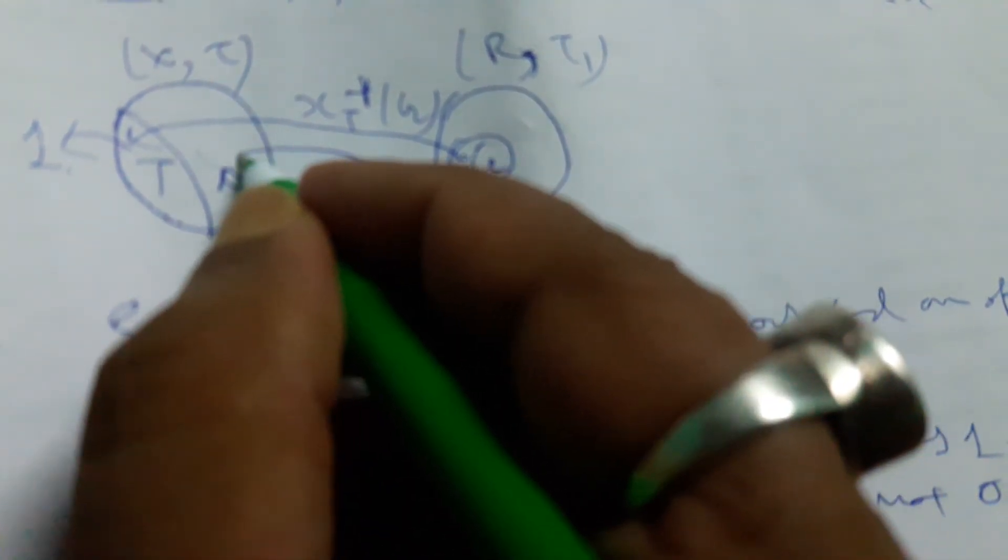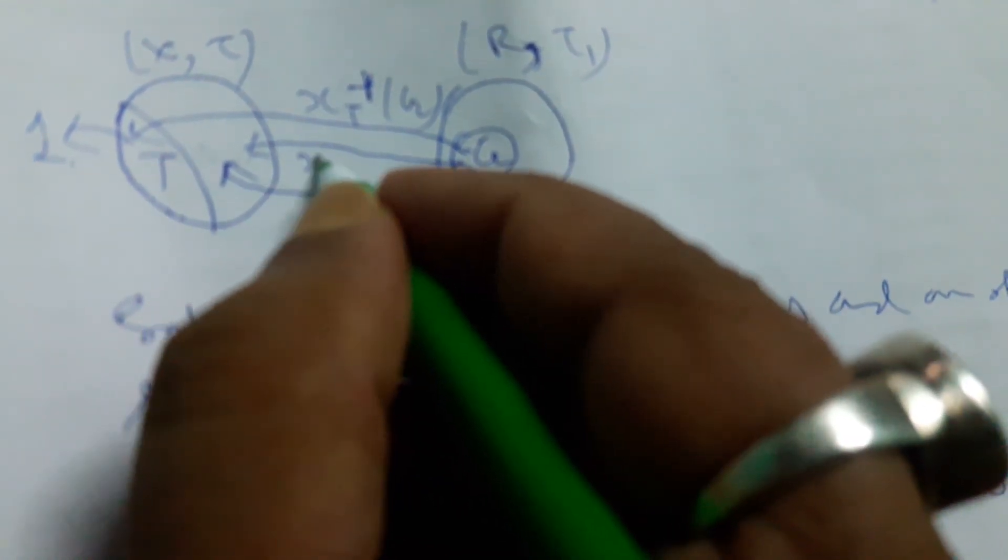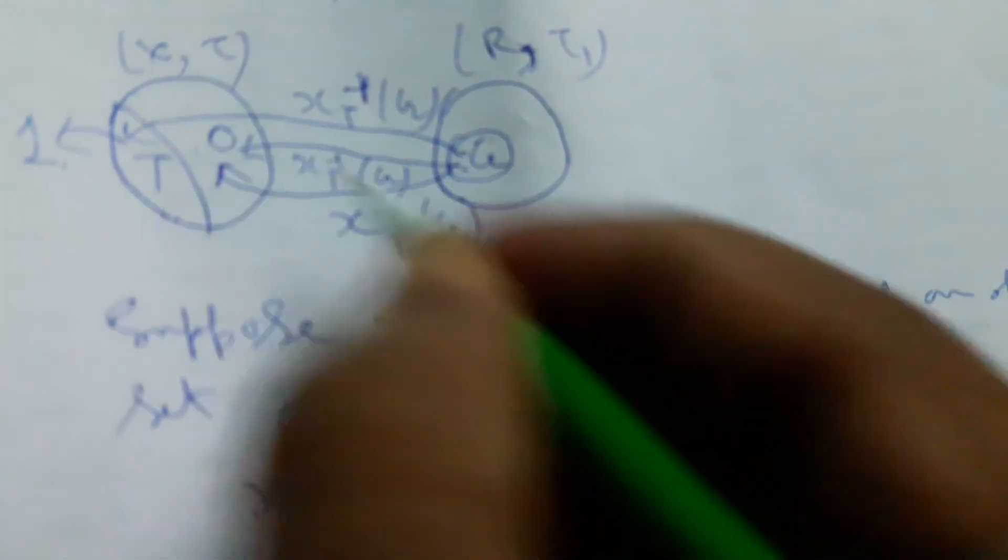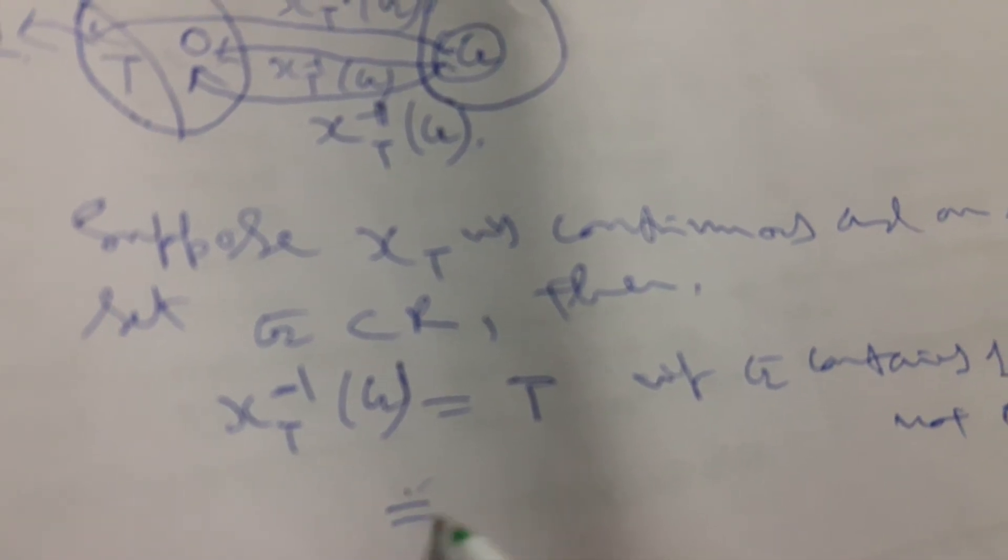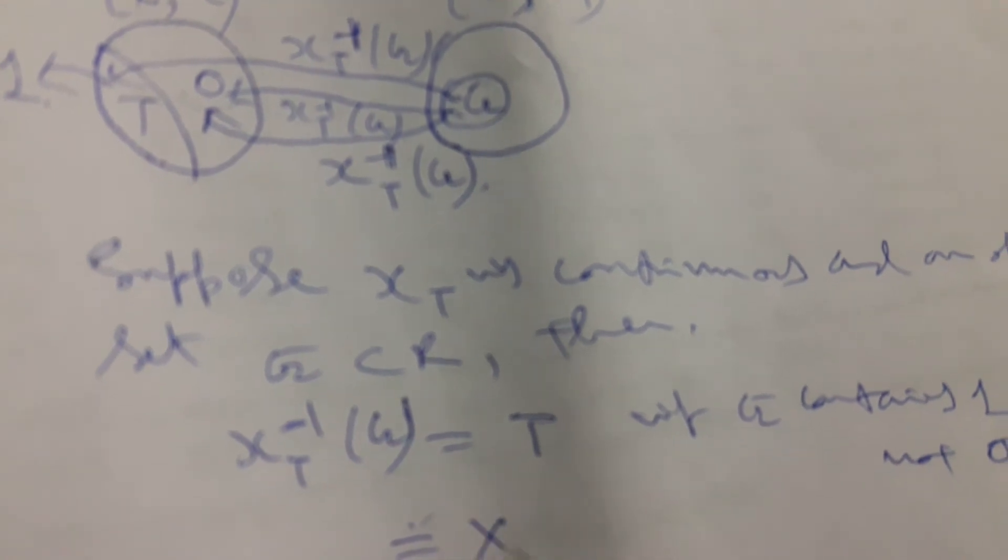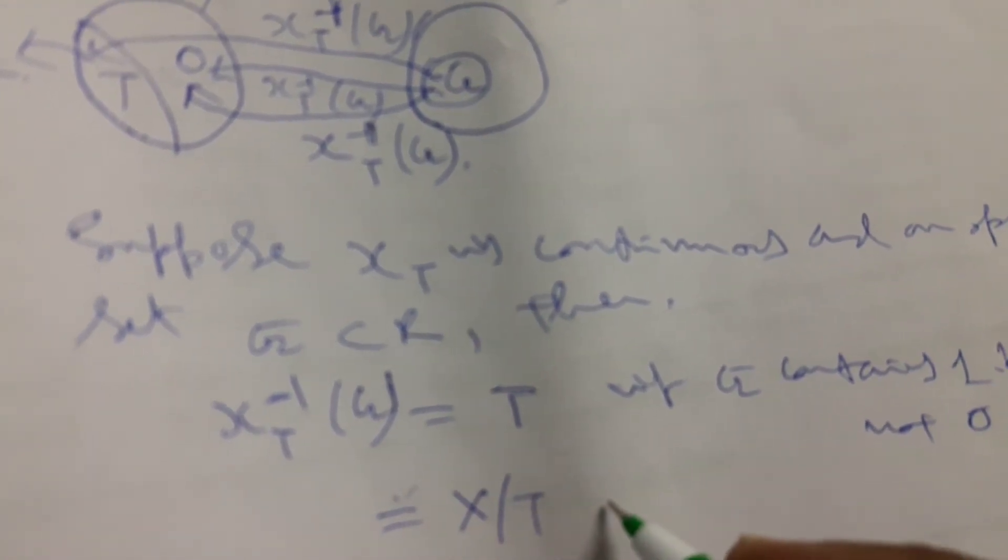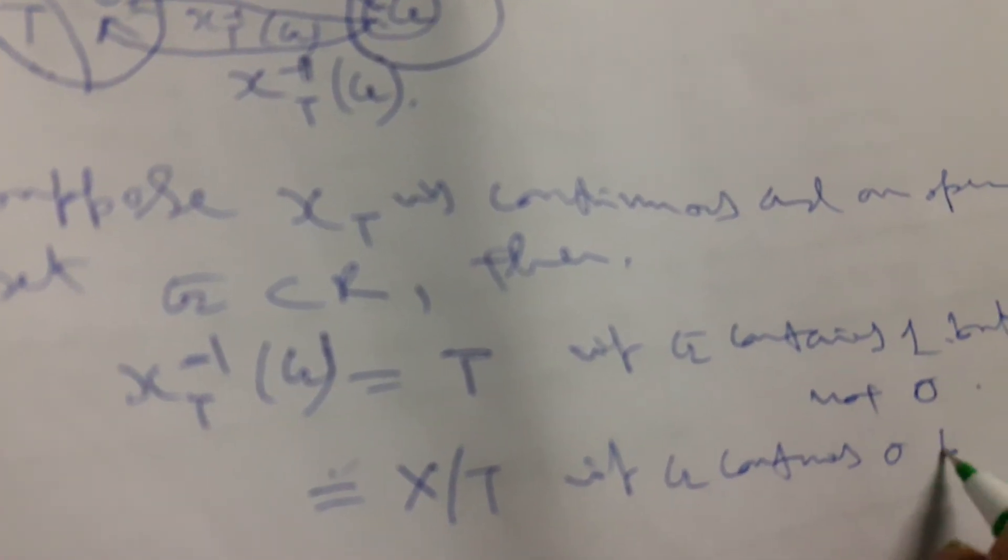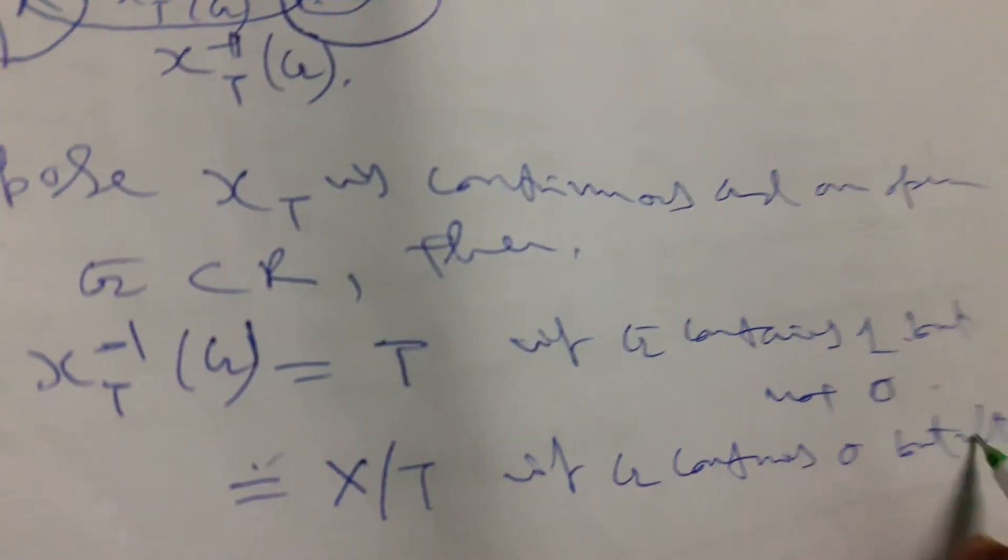In this direction, χ_T^(-1)(G), here we find 0. So we find it only in this region, the X minus T region, if G contains 0 but not 1.